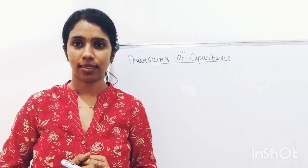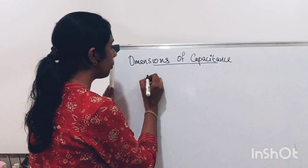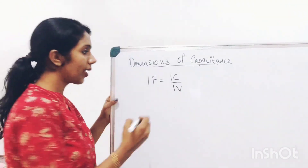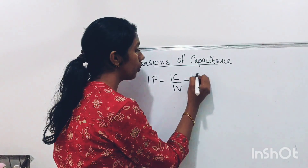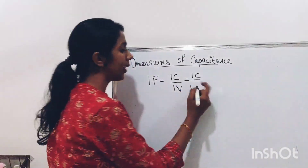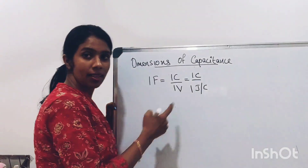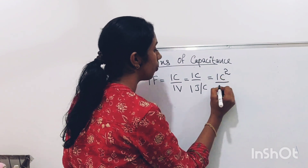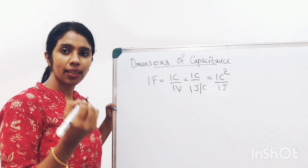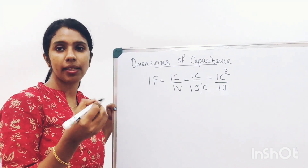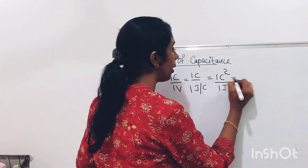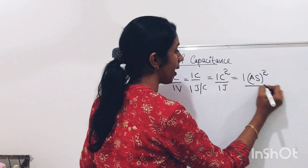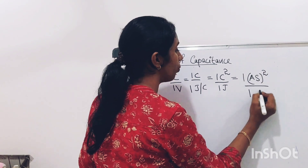Dimensions of capacitance. The unit of capacitance is 1 Farad = 1 Coulomb / 1 Volt. I can rewrite this as 1 Coulomb divided by Joule per Coulomb, since Volt equals Joule per Coulomb. This becomes 1 Coulomb² / 1 Joule. Since Coulomb equals Ampere × second, this can be written as A²s² / J.